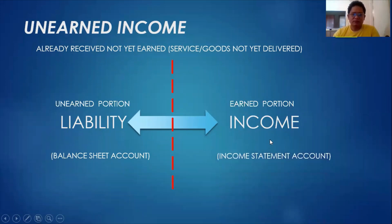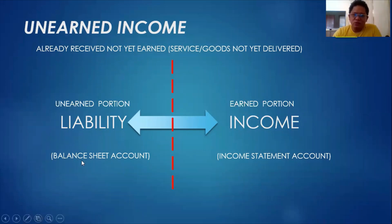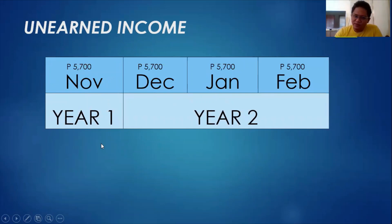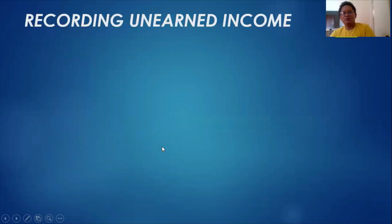As a reminder, we are preparing adjusting entries here, where every adjusting entry includes one balance sheet account and one income statement account. So unearned income: the customer paid us 22,800, good for four months. But remember, November 30 is our year end, so how do we record this?